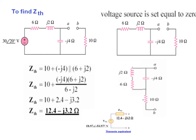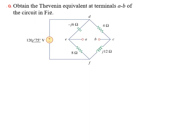Now we have V_thevenin and Z_thevenin, so we can draw the equivalent Thevenin circuit. In this example there was no load given across the terminal, but if there was a load we should have removed it first, then after calculating the Thevenin circuit we could reconnect the load to find the current or voltage required. Here's another example.